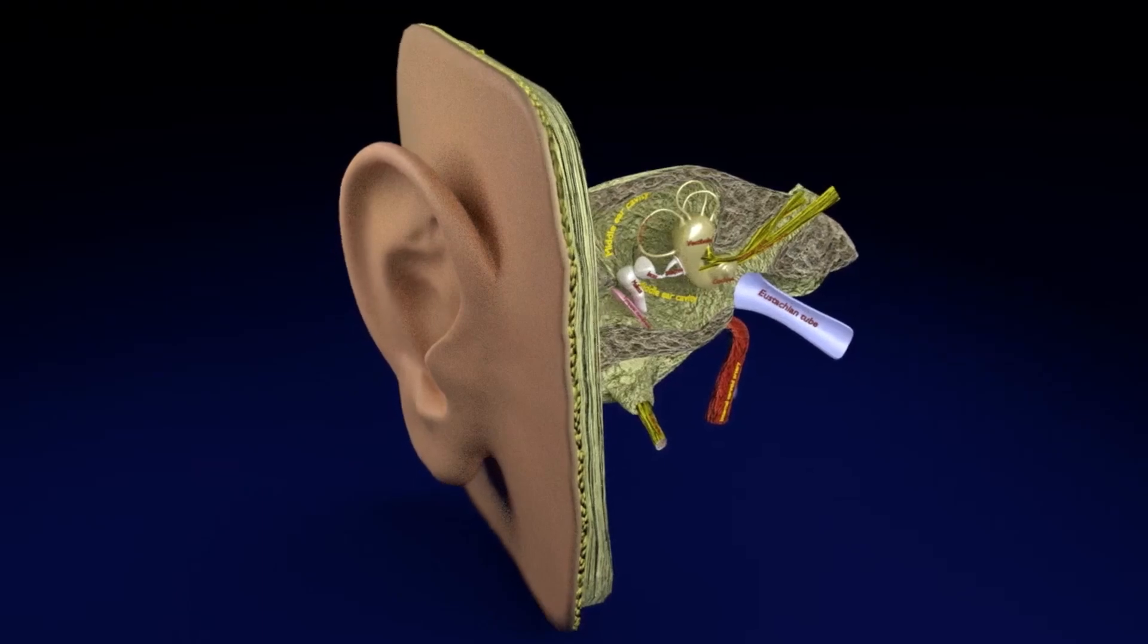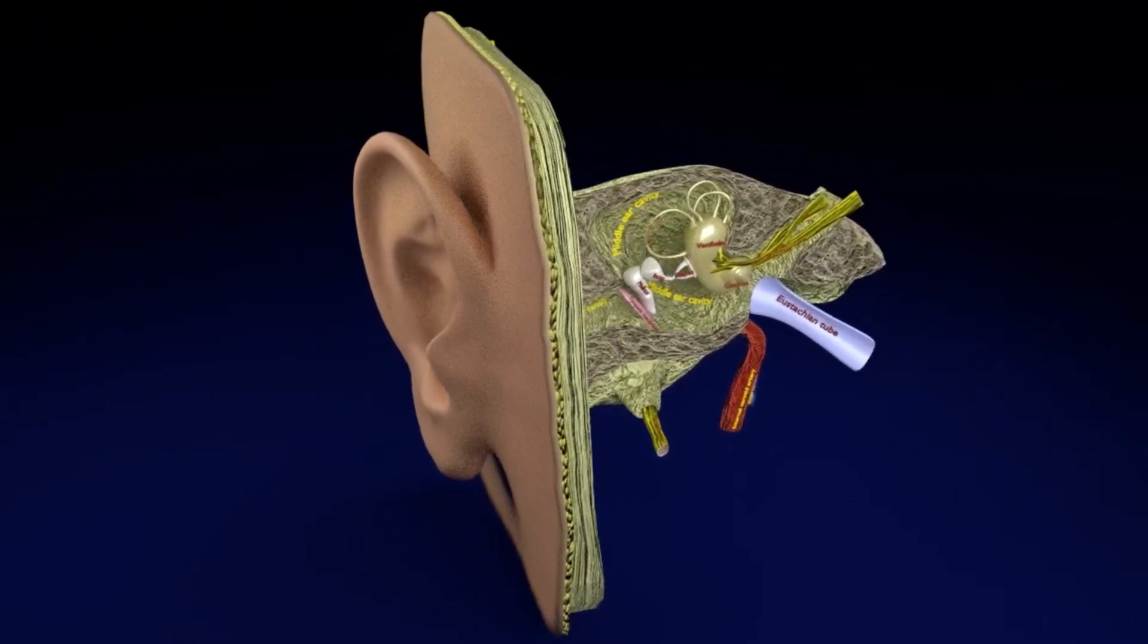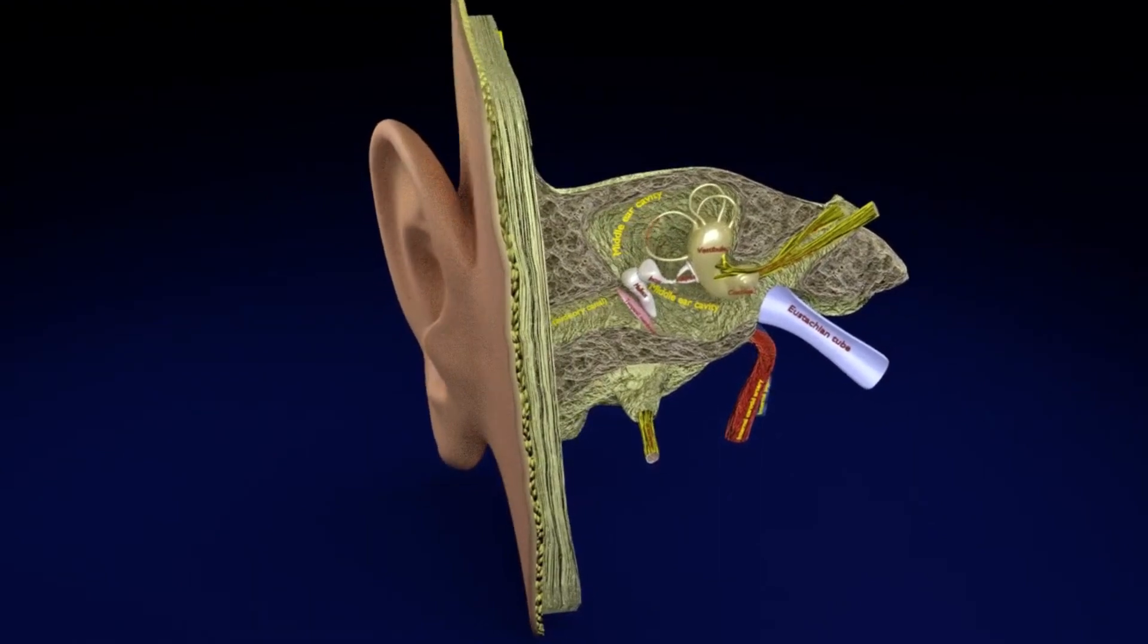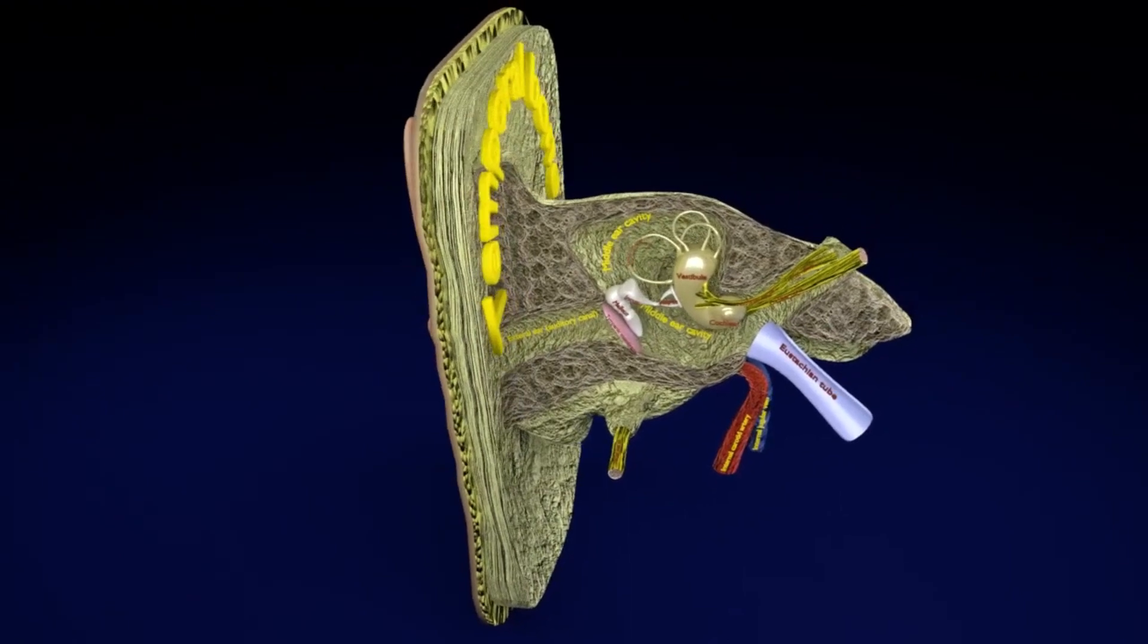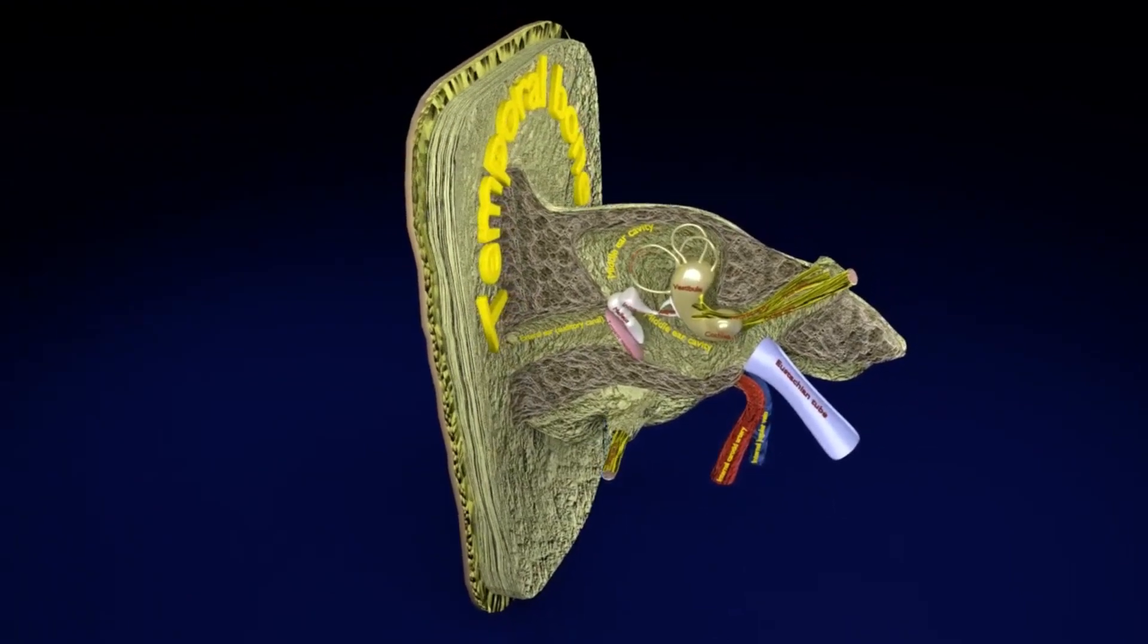The human ear is the organ that enables hearing and balance. Most of the human ear is encased in the temporal bone, especially the petrous part.